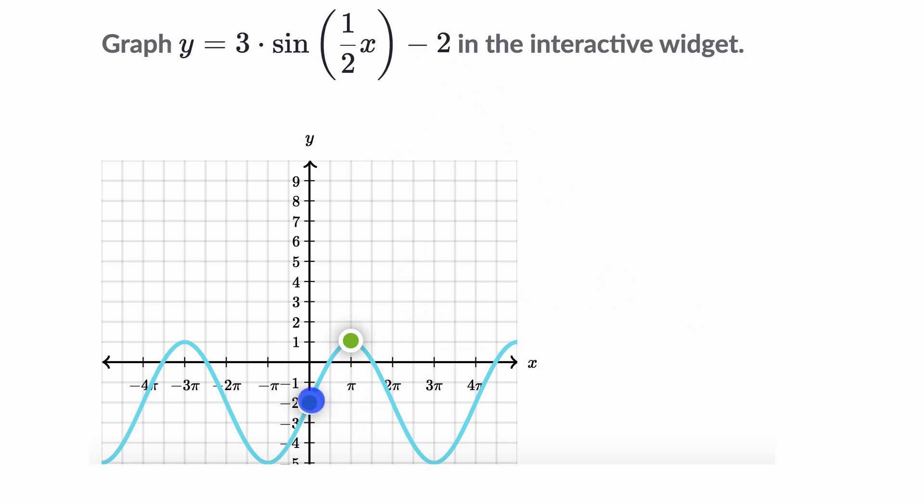Notice our period is still 4π. Our amplitude, how much we oscillate above or below the midline, is still 3. And now we have this minus 2.